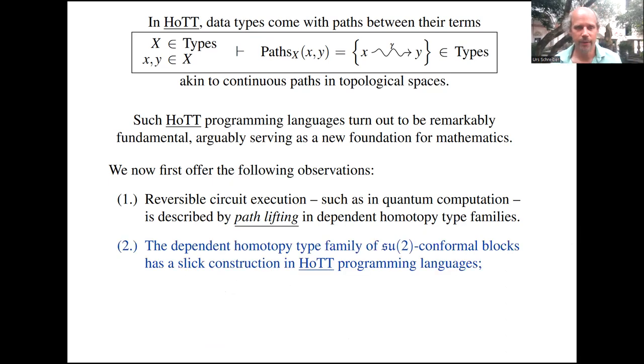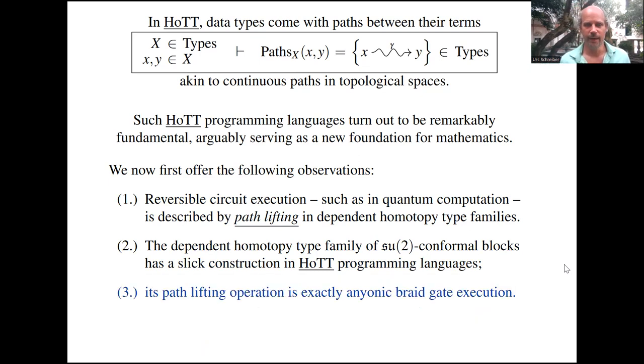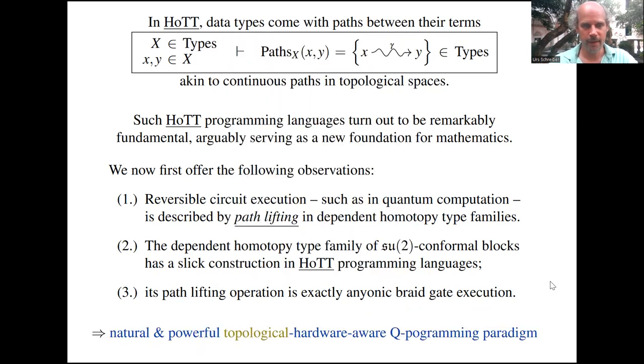But the non-obvious deeper point now is that we claim that the dependent homotopy type family of SU(2) conformal blocks, which encodes these anyonic braid gates, actually does have a slick and immediate construction in homotopy type theory programming languages. I flash the code, so essentially one line of code, once you have the braid group coded as I just indicated. It's essentially a one-line code. I'm sweeping some slight things under the rug here, but there's not much more to it, which constructs the bundle of conformal blocks. So it completely tells your computer what you mean by a bundle of conformal blocks. And so then the path lifting operation, we claim, in that dependent type theory exhibits, represents exactly the anyonic braid gate execution. So the lift of braids to actually unitary operators reflecting anyon braiding. This gives, we claim, a natural and powerful topological hardware-aware quantum programming paradigm.